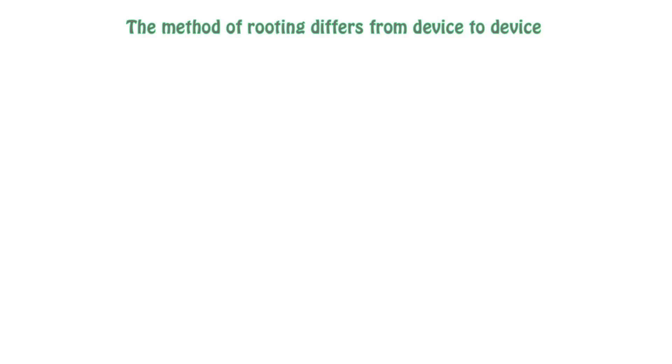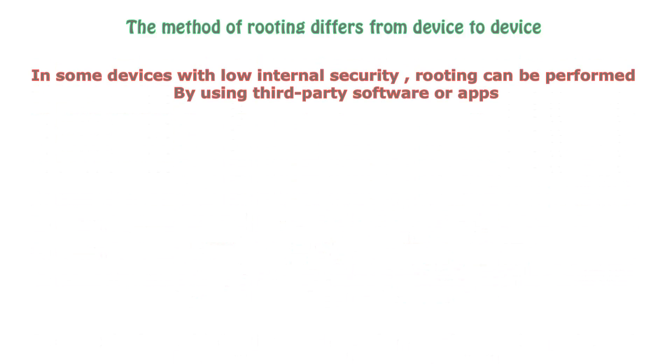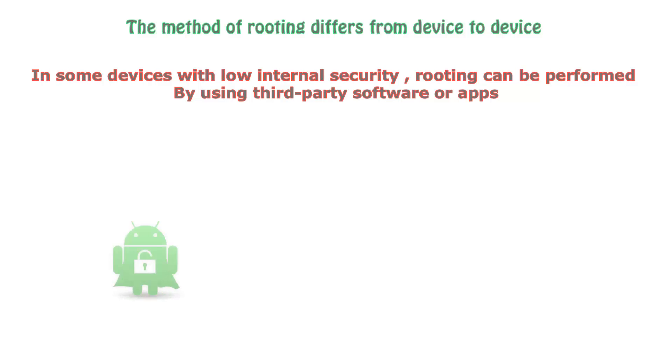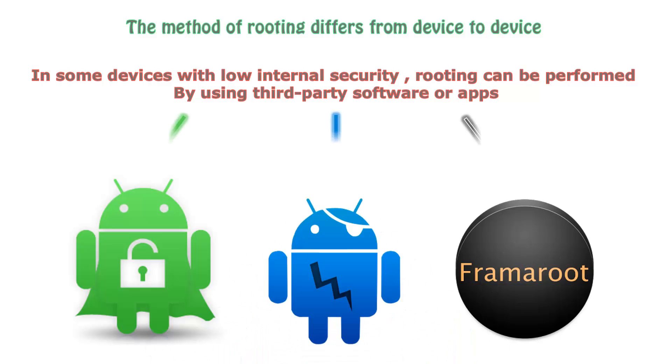The next question which comes to every user's mind is how to root your Android device. Rooting your Android device is not that complex a process — as days have passed, it has been made much easier. The rooting process differs from device to device. For example, if you have a Samsung Galaxy S6, the rooting process differs compared to the Samsung Galaxy S4. Similarly, rooting differs from OS to OS. For KitKat you root one way, and for Lollipop you go another way. Rooting can be easily performed using third-party software like Unlock Root Pro, and even using a rooting app downloaded from the Play Store on some low-security devices.